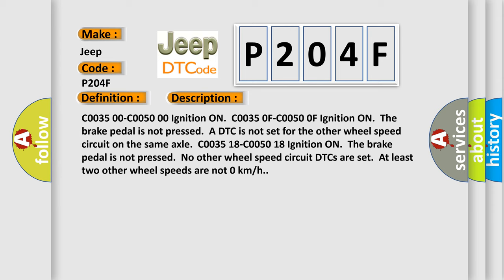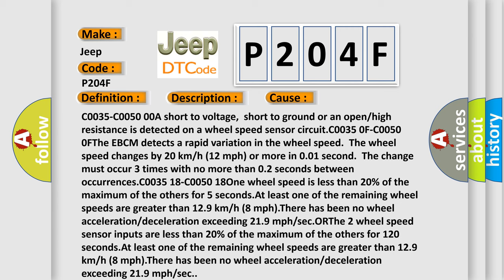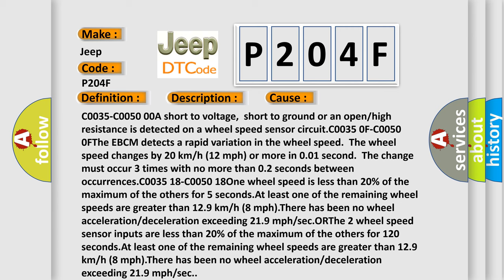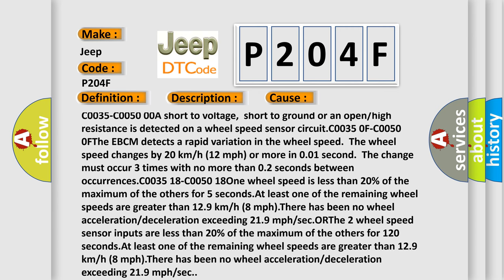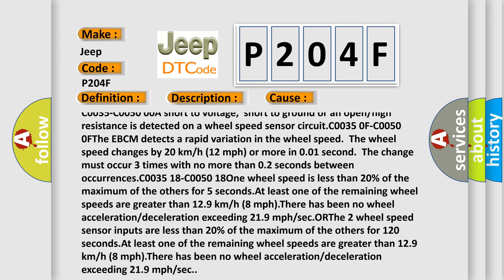This diagnostic error occurs most often in these cases. C0035 C0050 0A: short to voltage, short to ground, or an open or high resistance is detected on a wheel speed sensor circuit. At C0035 0F C0050 0F, the EBCM detects a rapid variation in the wheel speed.